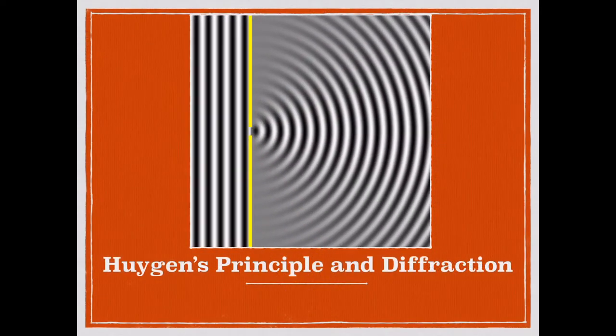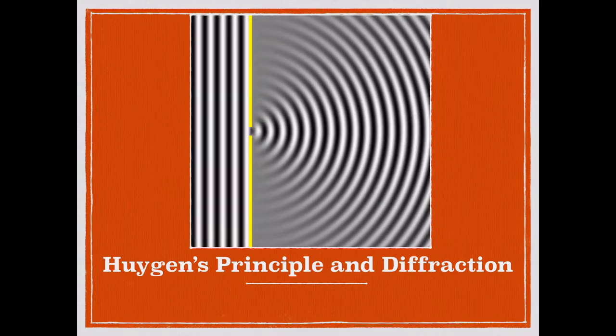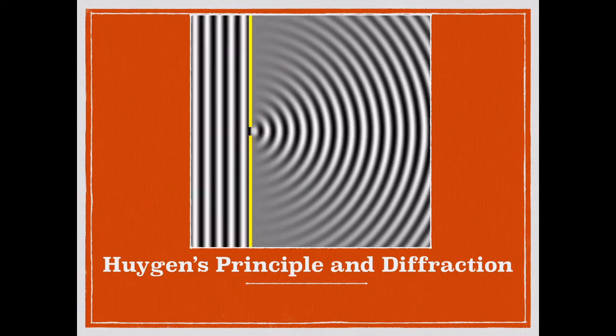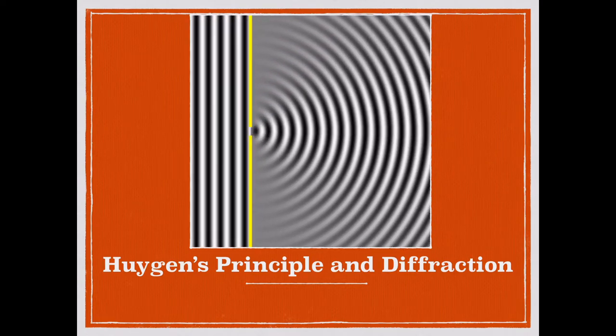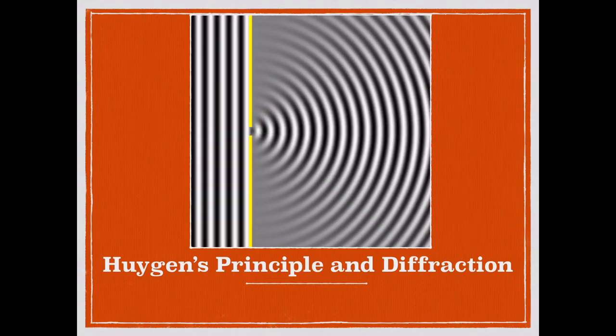Huygens Principle and Diffraction: When light goes through an opening with a barrier, every point on the light within the opening creates a circular wave which propagates outwards.